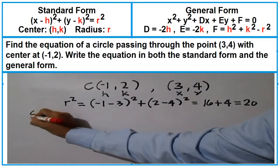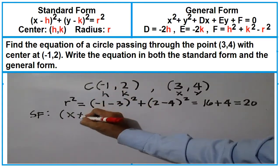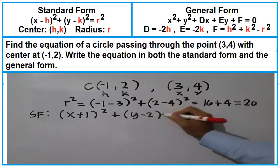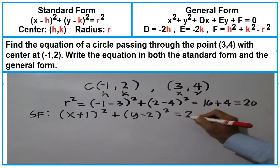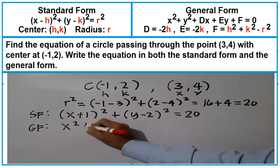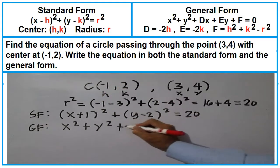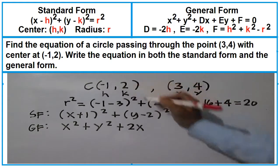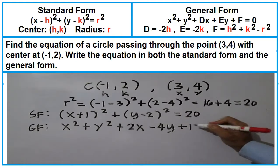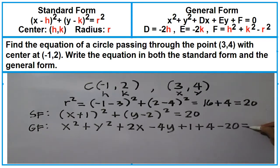The standard form is (x minus negative 1), or (x plus 1) squared, plus (y minus 2) squared equals 20. The general form is x squared plus y squared. Negative 2 times negative 1 is 2, plus 2x. Negative 2 times 2 is negative 4y, plus negative 1 times negative 1 is 1, plus 2 times 2 is 4, minus r squared which is 20, equals 0.